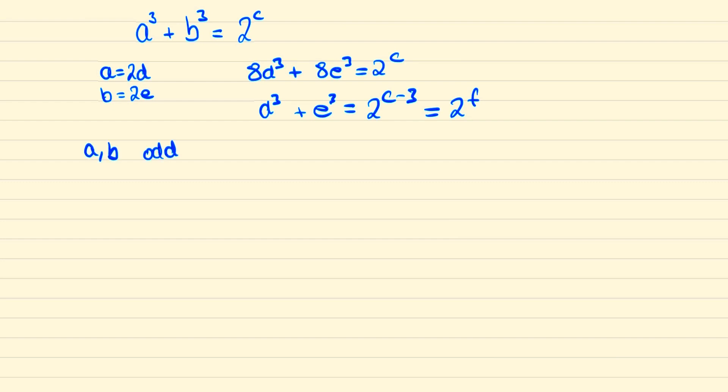And so considering the case now where a and b are odd, then we can factorize a³ + b³ as the following which will all equal 2^c, and so we can say that a + b must equal some power of 2 and a² - ab + b² must also equal some power of 2.